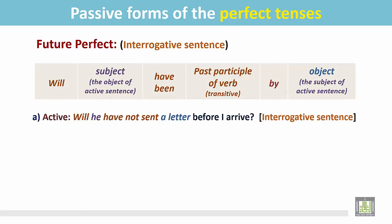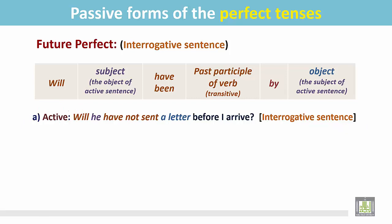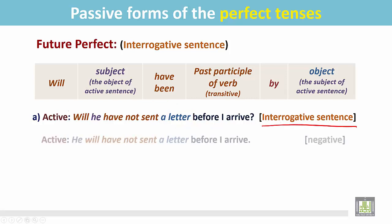Another example. This sentence is in the interrogative form but in the negative: 'Will he have not sent a letter before I arrive?' In this sentence, 'a letter' is the object of the verb 'sent'. Now change this interrogative sentence into a statement: 'He will have not sent a letter before I arrive.'